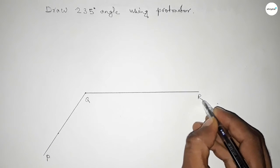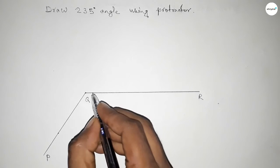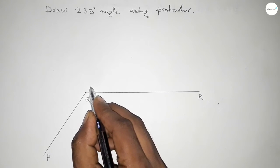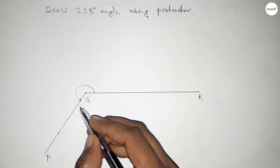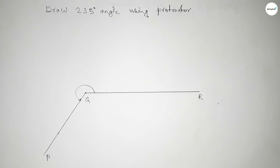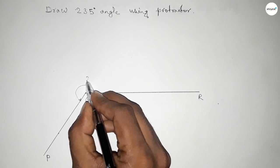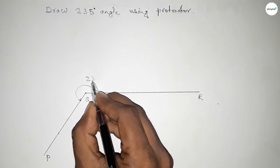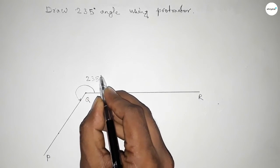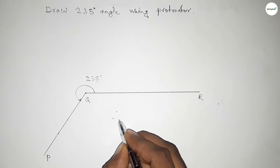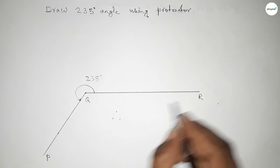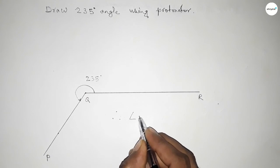So this is angle PQR, and this is 235 degree angle. Therefore, angle PQR equals 235 degrees.